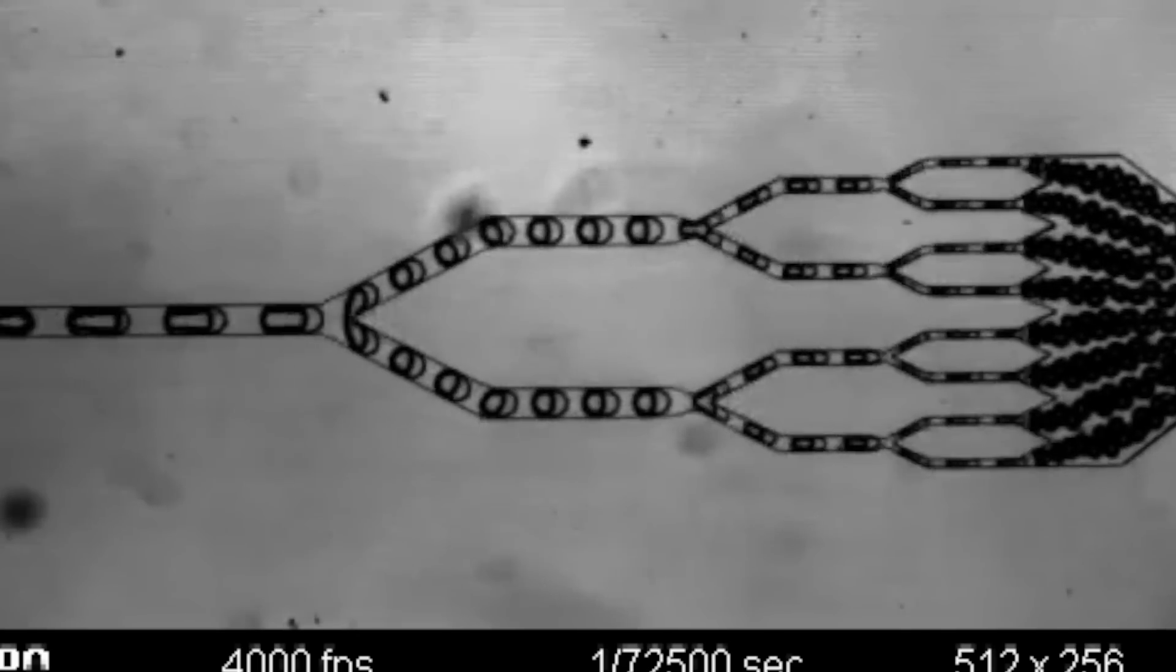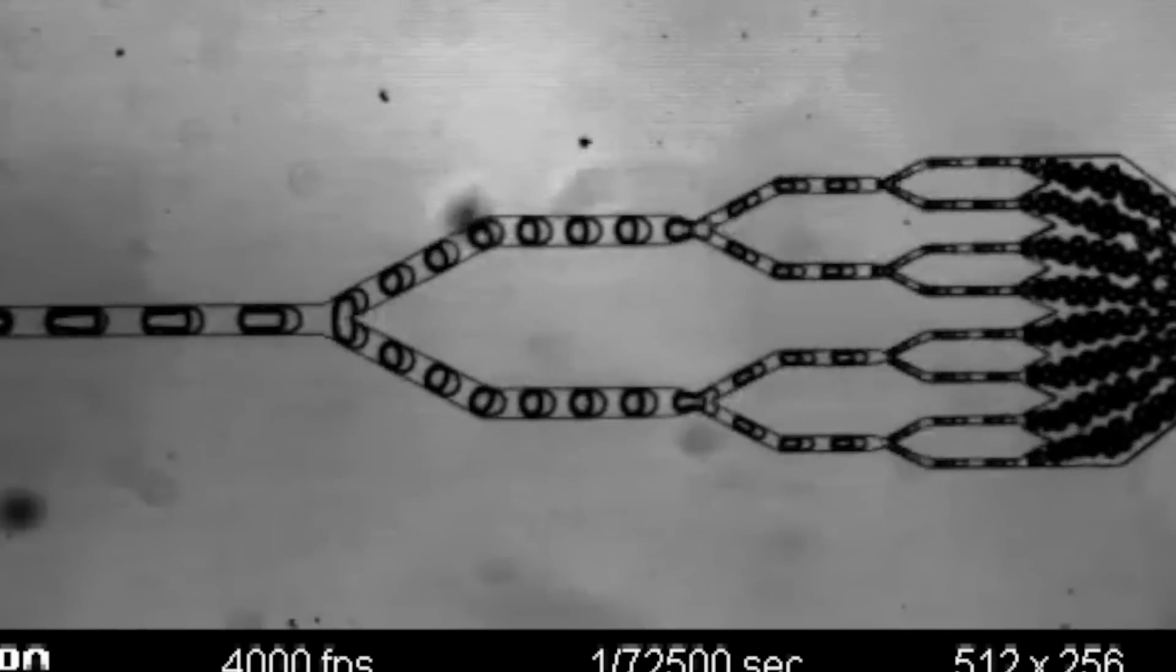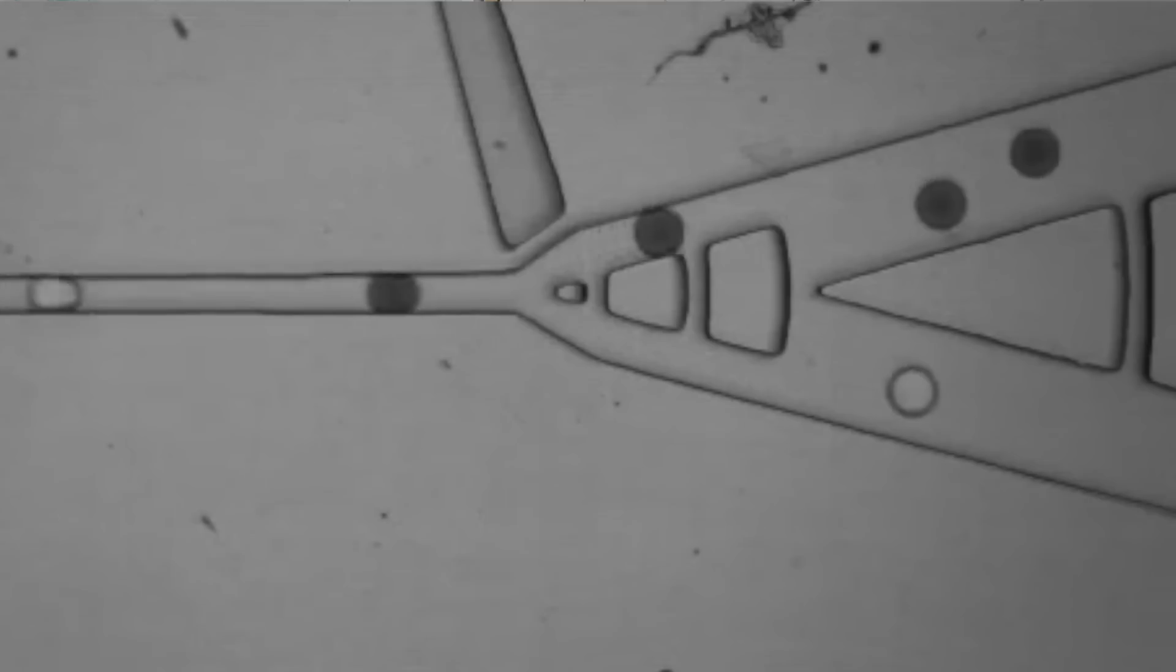We can take a blood sample, partition it into billions of separate tiny samples, and then perform an assay on each of those samples.